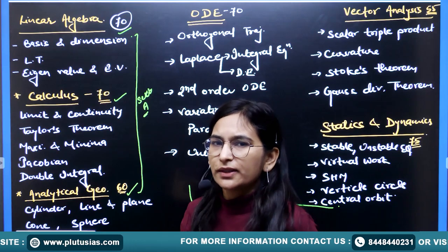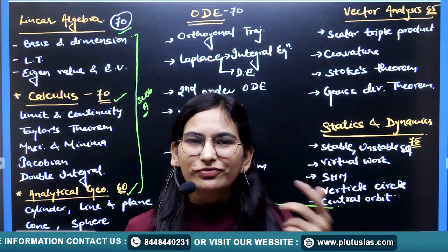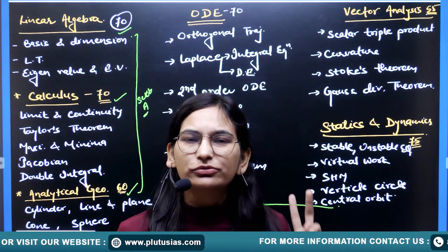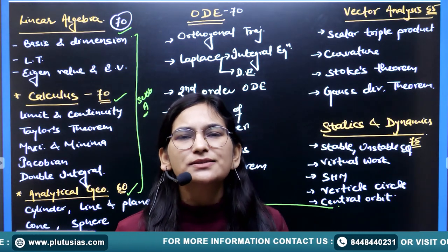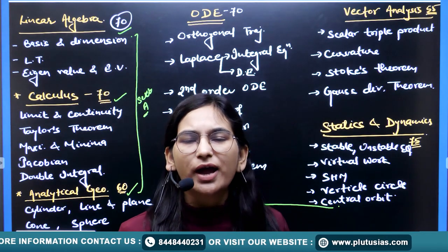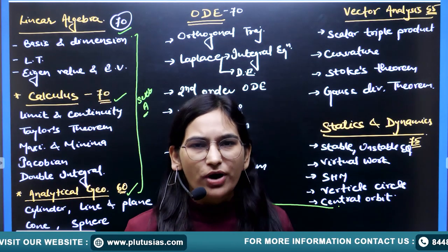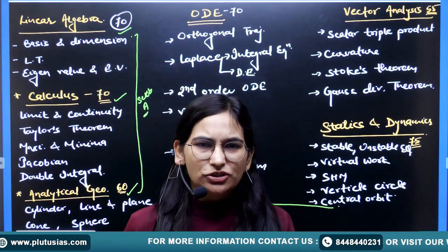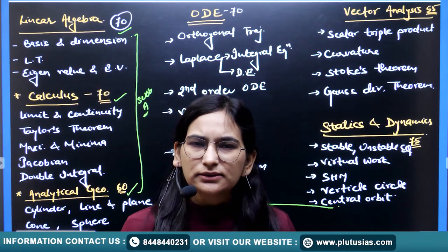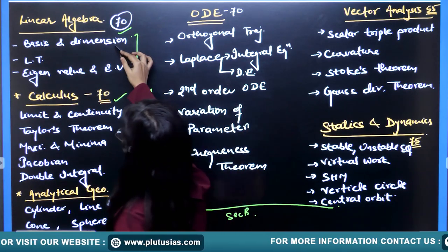There were 2 questions from basis and dimension. They gave you 3 vectors and you have to find out what the basis is. Convert into matrix format, then convert directly into Echelon form. They asked you to extend that basis to the basis of R4 — easily done by the expansion theorem. The number of non-zero rows in the Echelon form gives the dimension.